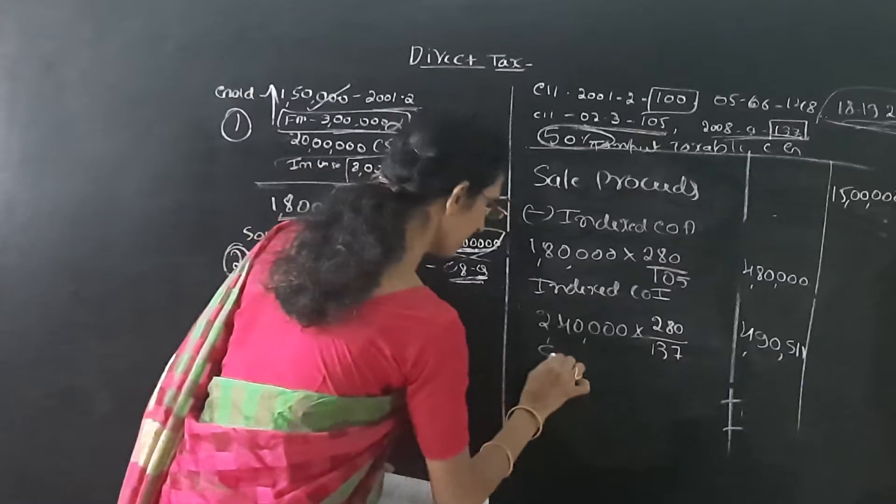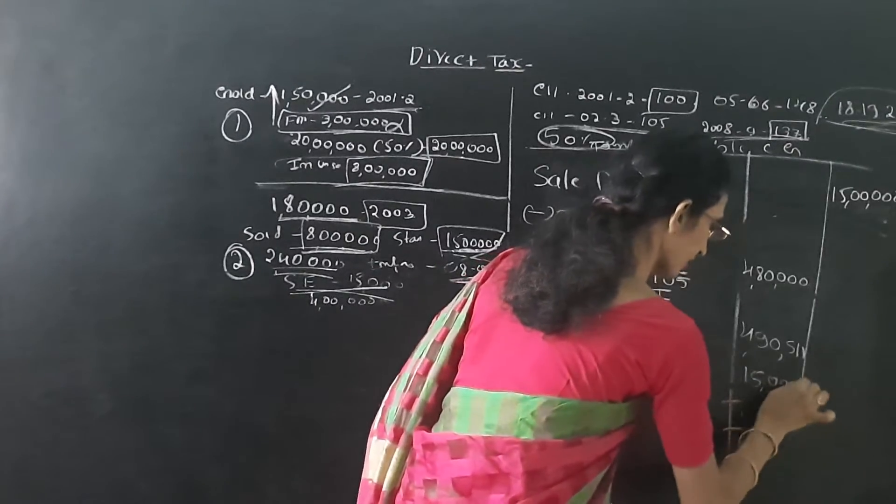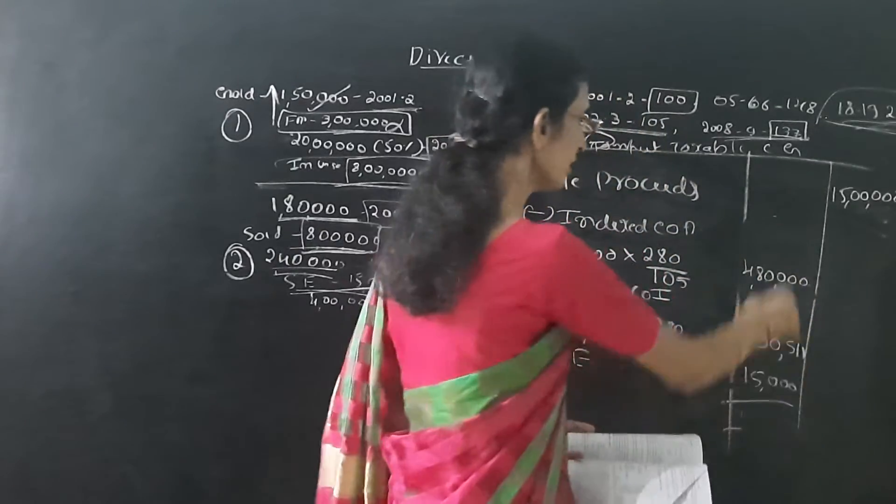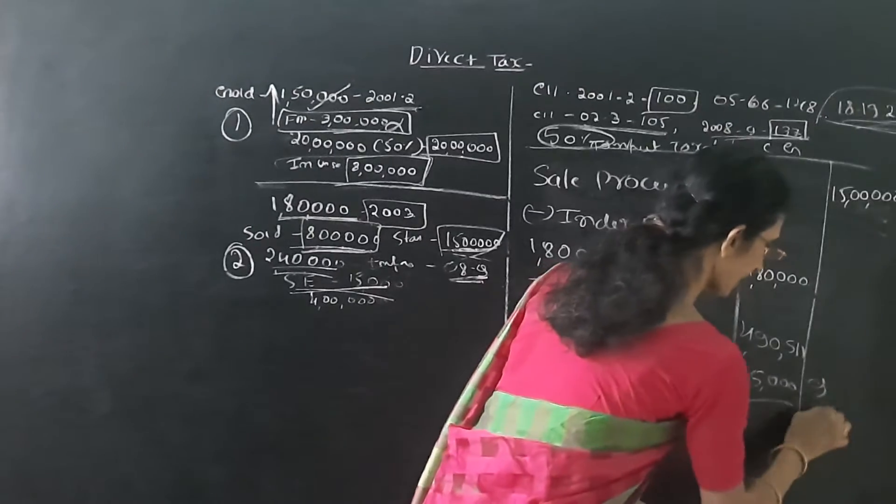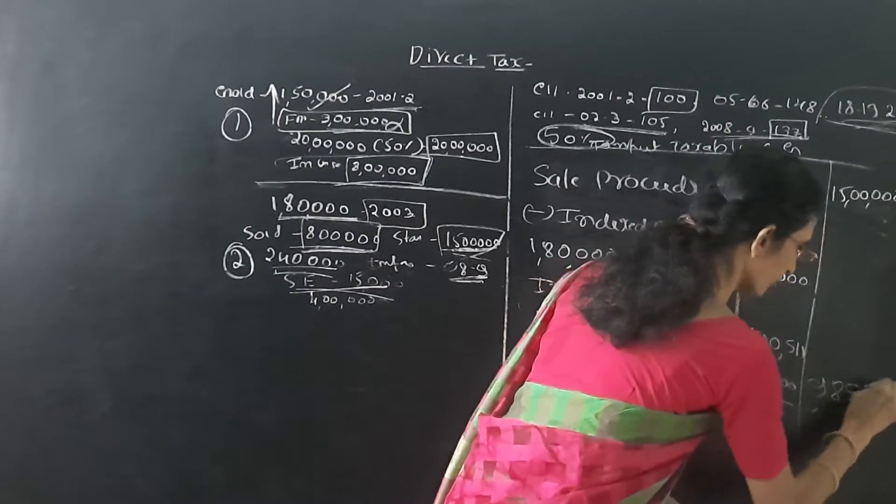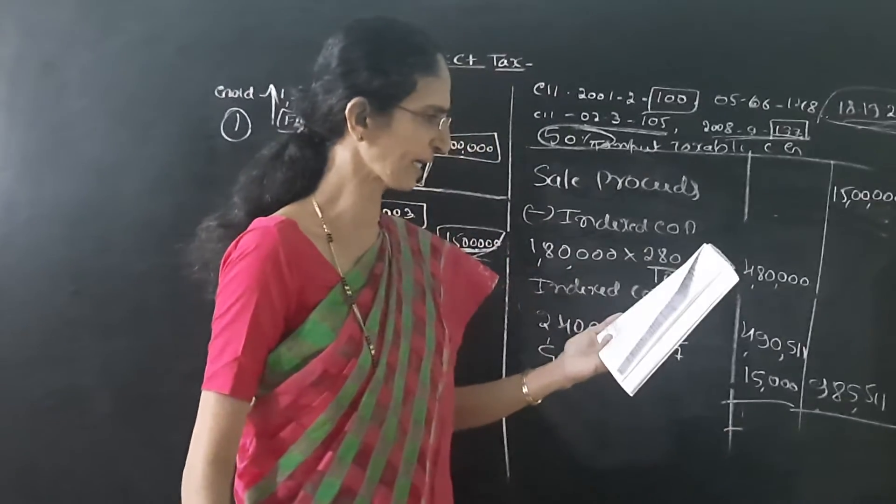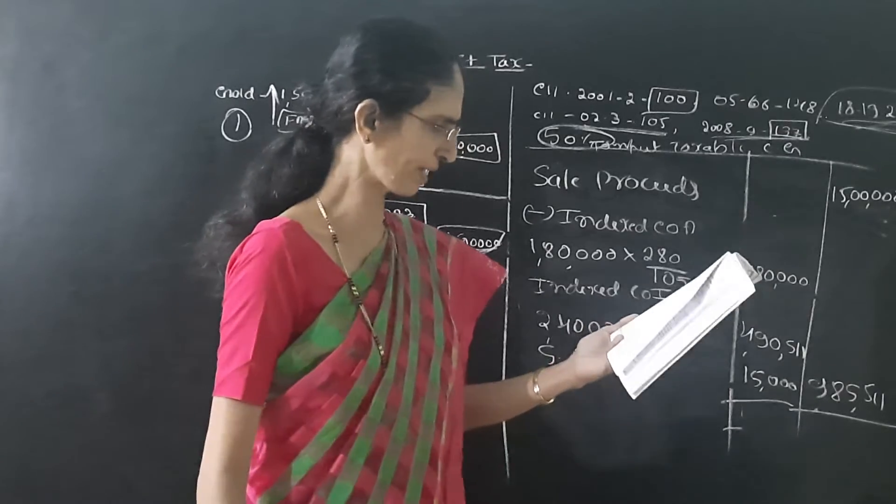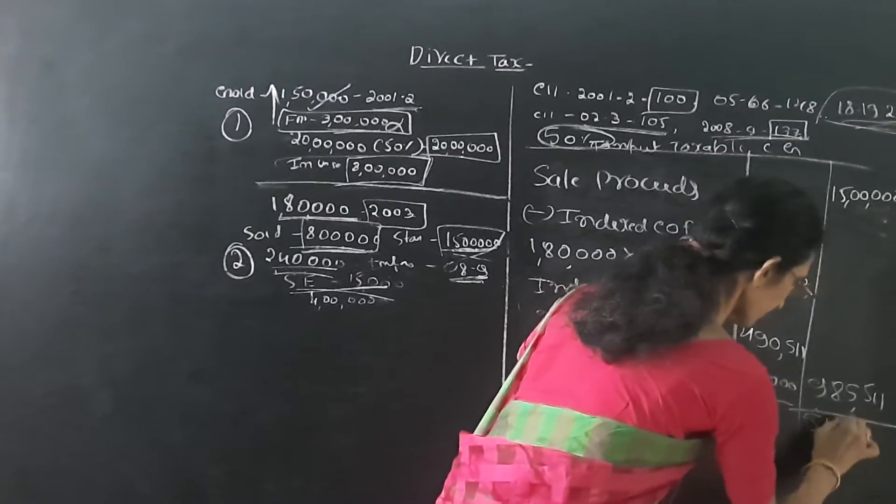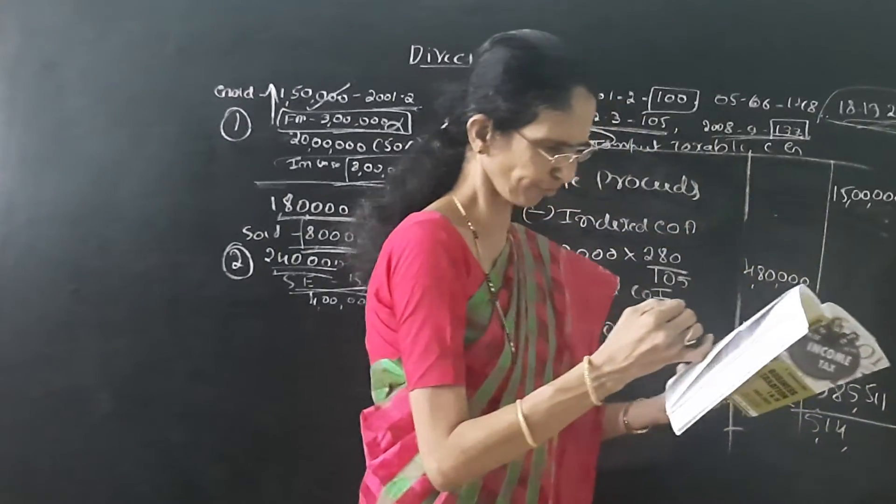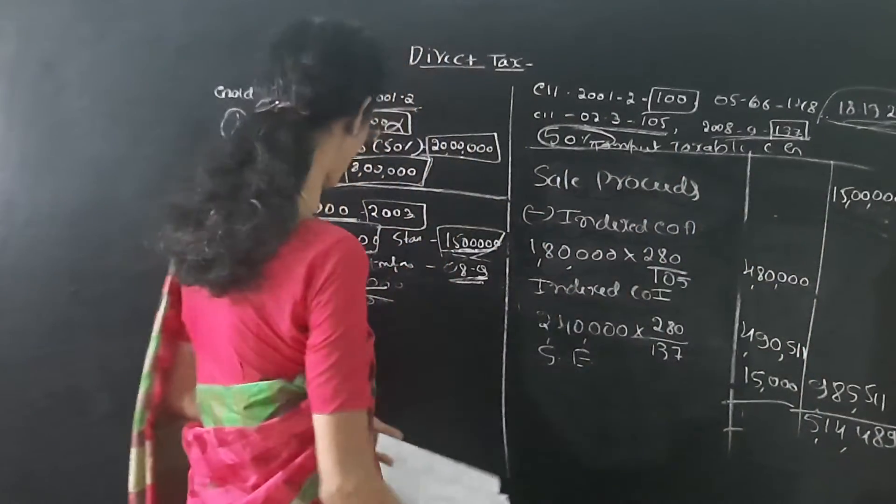Here it is given selling expenses. It is also deducted. We have to take here selling expenses 15,000. All these 3 items should be deducted. At the first column, we get 9,85,511. From this amount, we will have to deduct this. Then we get 5,14,489.